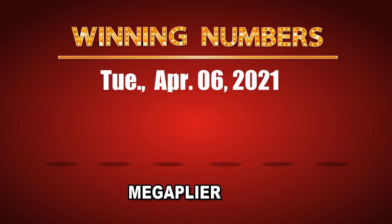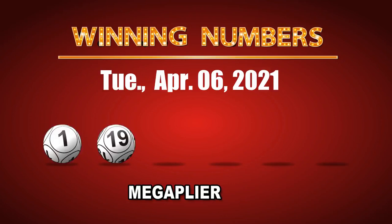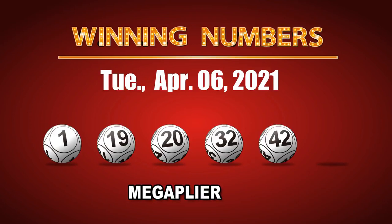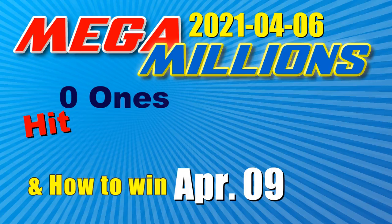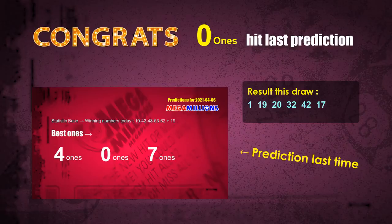The winning numbers of Tuesday, April 6, 2021 are 01, 19, 20, 32, 42, and the mega ball is 17. The mega player is 3. Congratulations to friends who bet on 01 — those are hit! Congrats to all winners. Now I'll tell you how to find out winning numbers for the next draw, step by step.